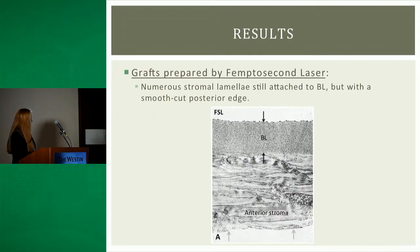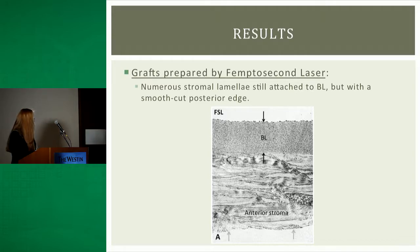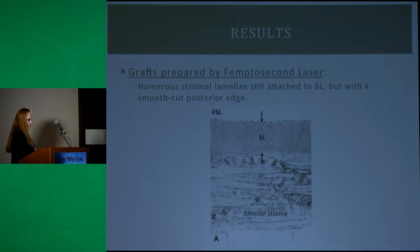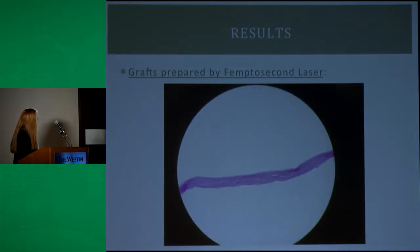Here is a transmission electron microscopy image of one of the grafts prepared by femtosecond laser. At the top of the image you have your Bowman layer, and then a significant amount of anterior stroma still connected, but a very smooth posterior edge to the graft created by the laser. Another PAS-stained image also shows Bowman layer, the anterior stroma, and that smooth posterior edge.